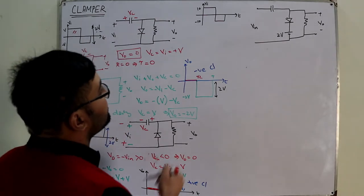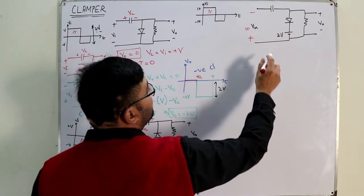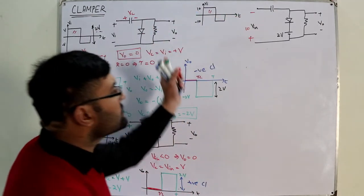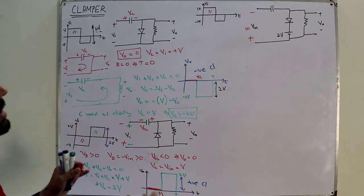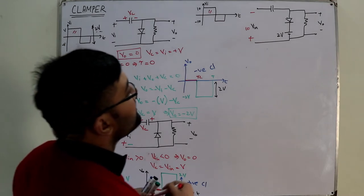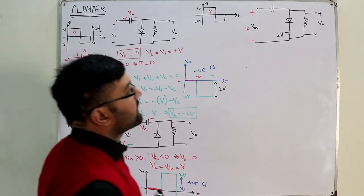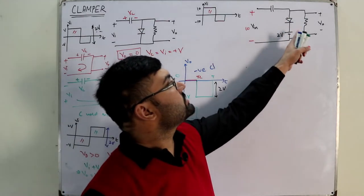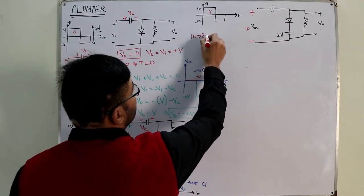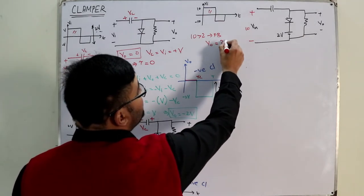For the plus cycle — this is the case with minus-plus polarity, input is 10. Now 10 is greater than 2. So the 10 is making the diode forward biased, and the 2 is making it reverse biased. But since 10 is greater than 2, the diode is forward biased. The output is directly 2 volts.